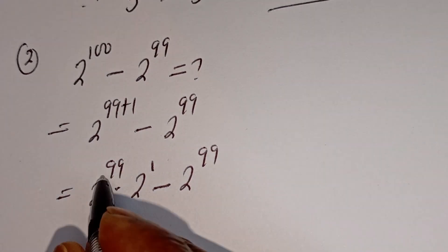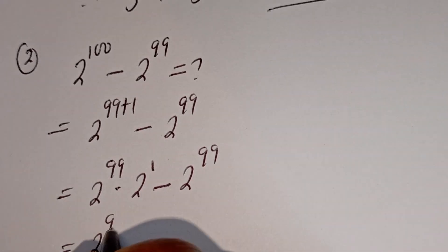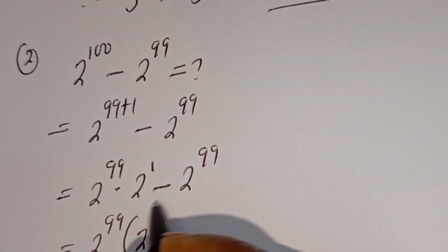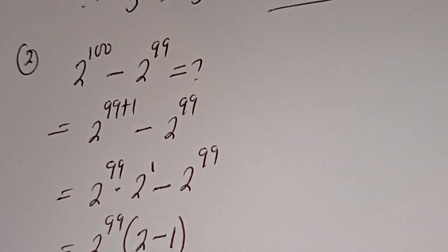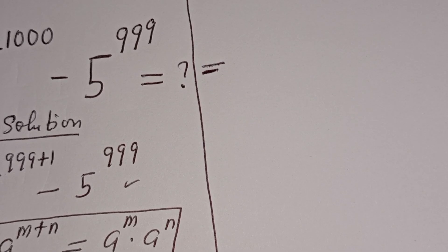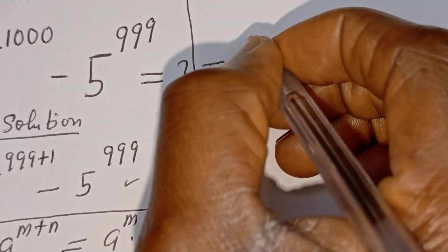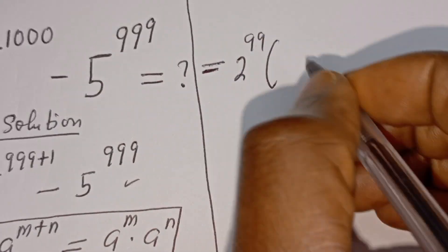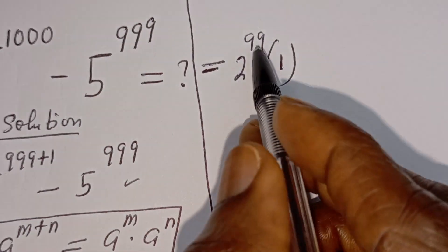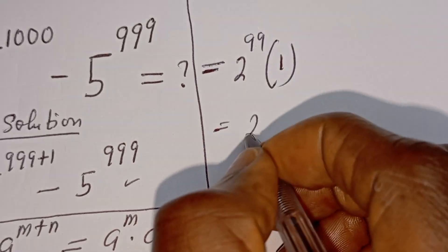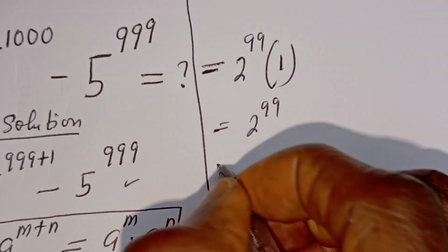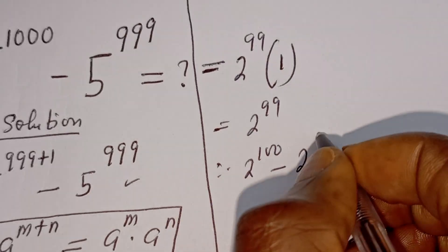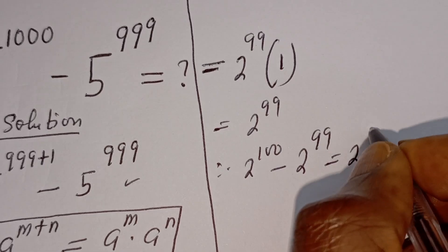And as you can see, 2 to the power of 99 is common. This is 2 to the power of 99, bracket, 2 to the power of 1 is 2, minus if you divide this by this, is 1. Then this is 2 to the power of 99, bracket, 2 minus 1, that is 1. And if you multiply 2 to the power of 99 by 1, you have 2 to the power of 99. Therefore, 2 to the power of 100 minus 2 to the power of 99 is equal to 2 to the power of 99.